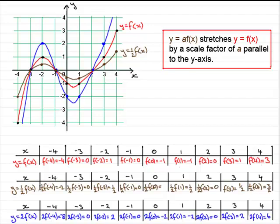If we plot the corresponding coordinates and draw the curve in, you can see that the red graph has been pulled out by a factor of 2. We get the new graph y = 2f(x), where a is 2. So y = 2f(x) stretches y = f(x) by a scale factor of 2 parallel to the y-axis.